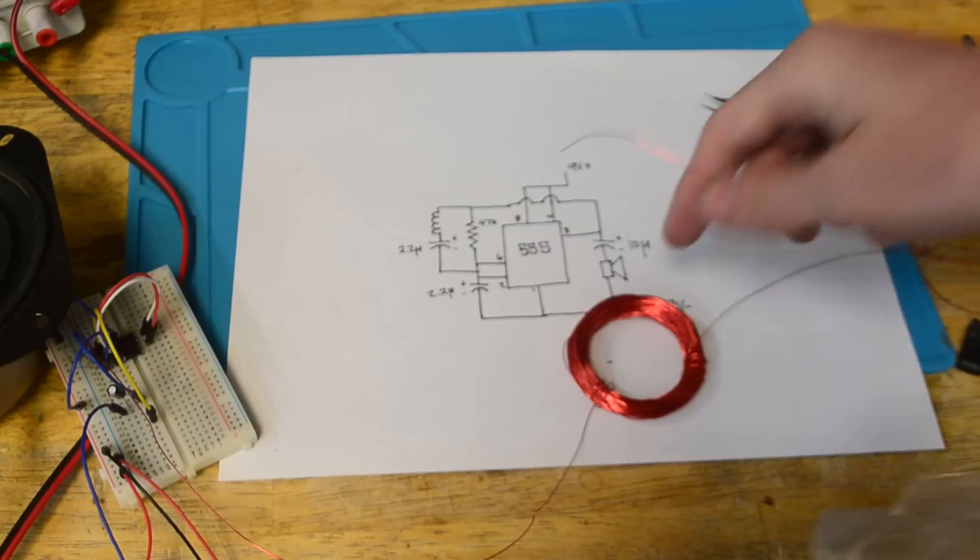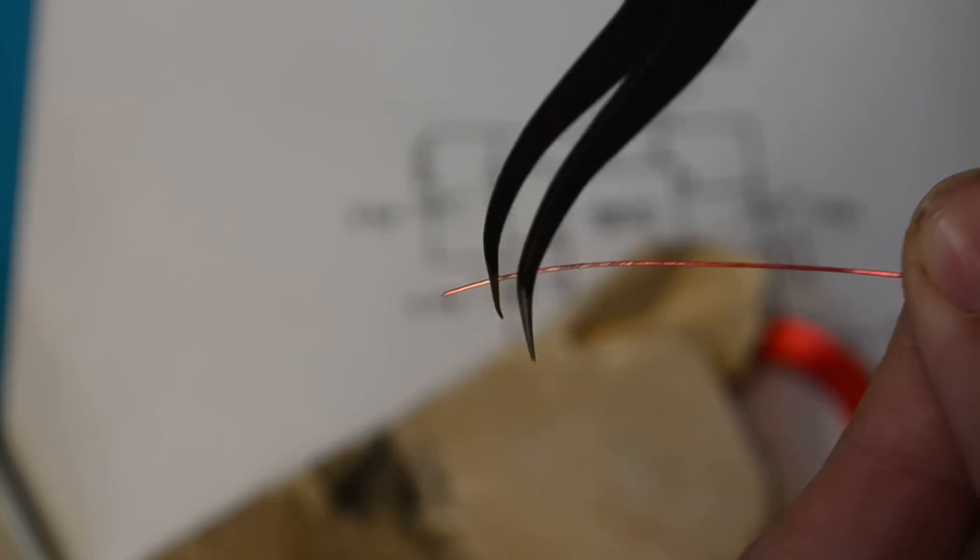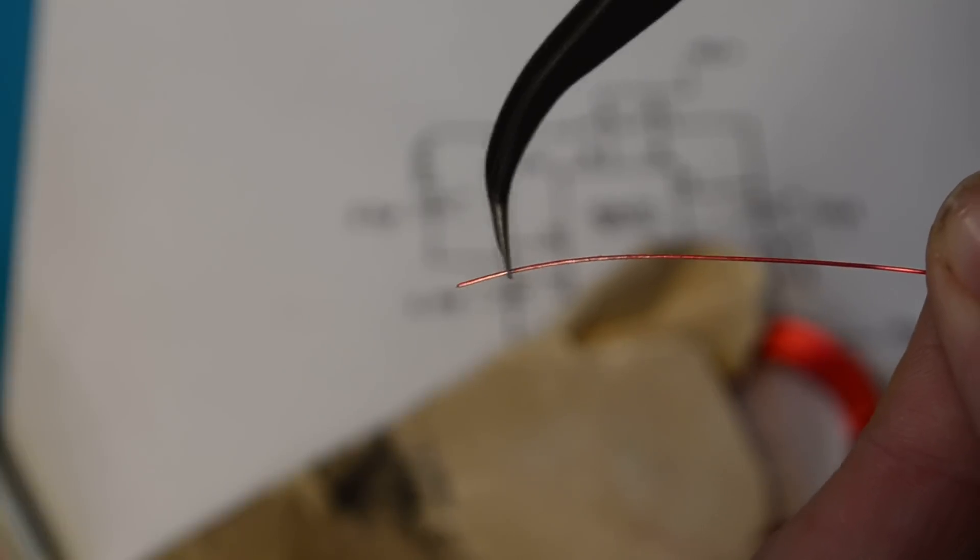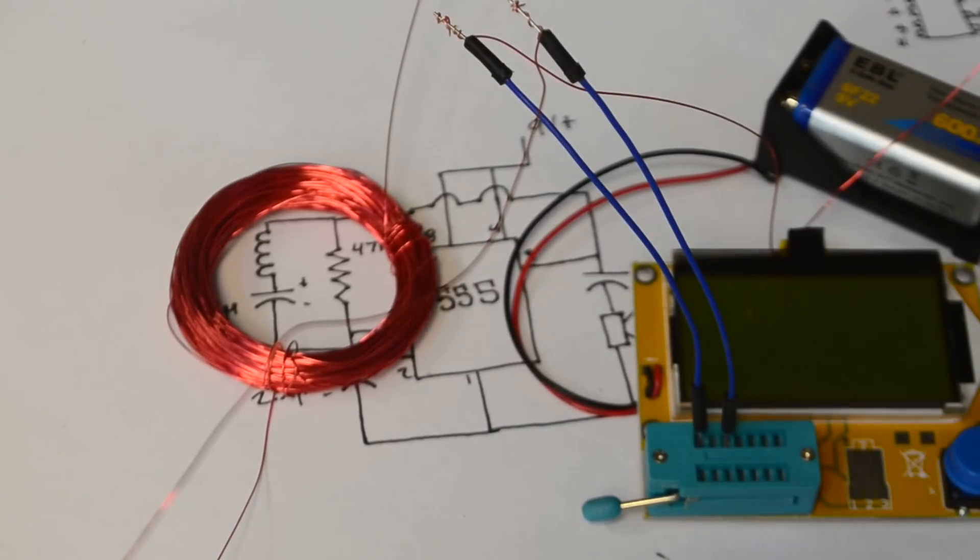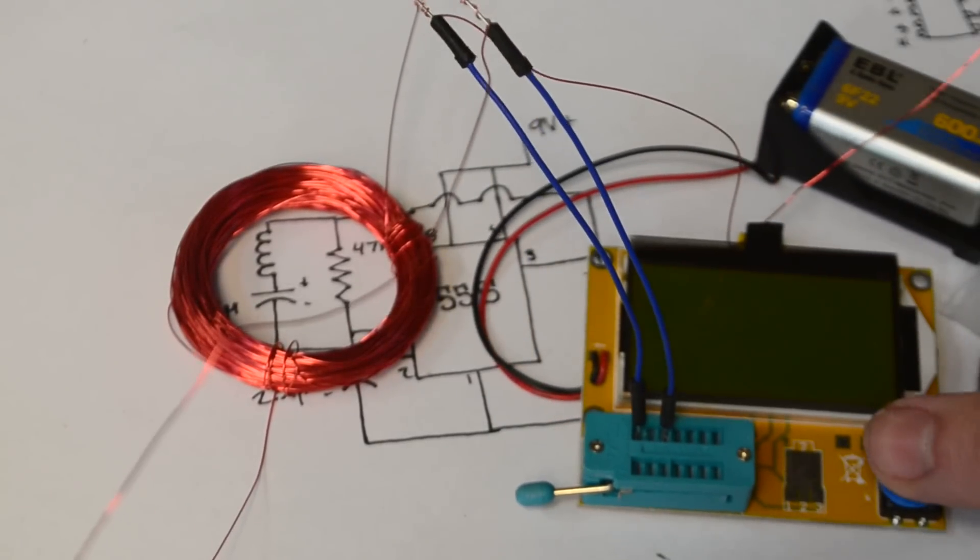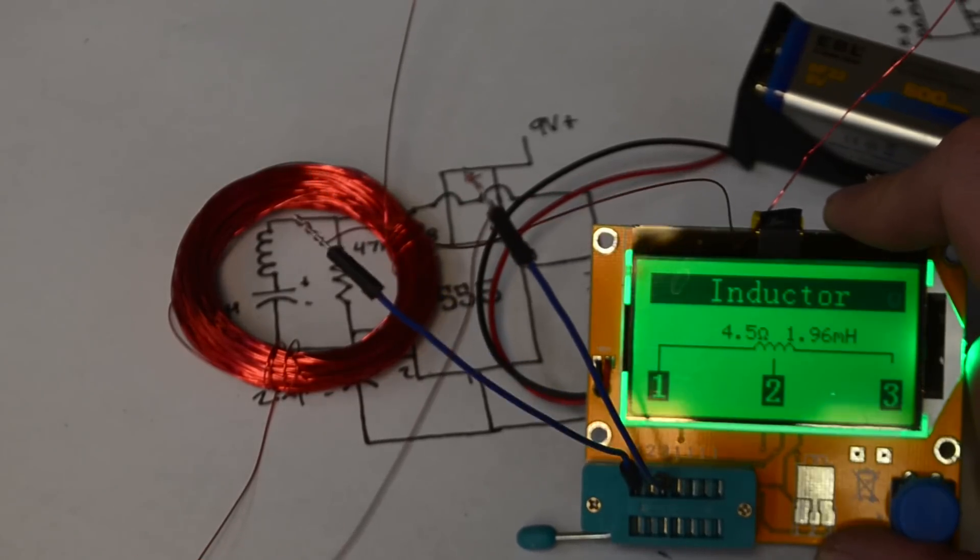And so here I have the completed coil. Now since as I was saying earlier this magnet wire has an insulative coating you're going to need to get sandpaper like this to sand off that coating. And when you do you should be able to tell a visible difference between the bare copper and the red enameled wire. And now with that all sanded off let's use this device here to check the inductance of the coil. As you can see the inductance is about 1.96 microhenrys and the resistance is about 4.5 ohms.